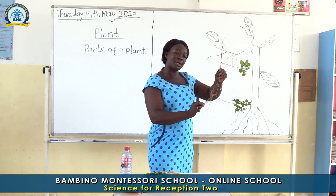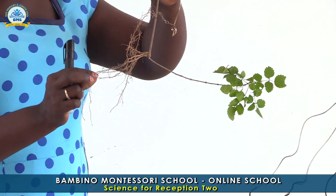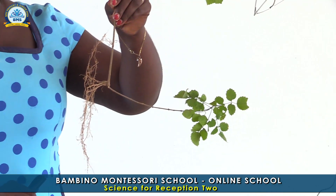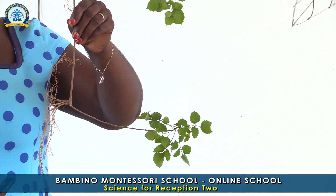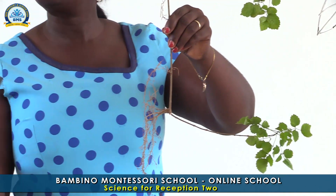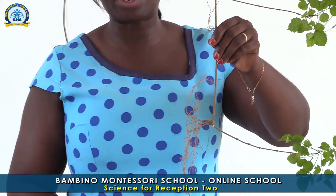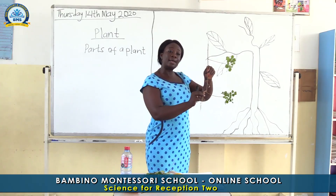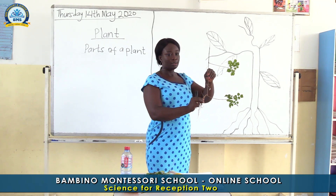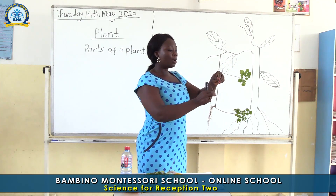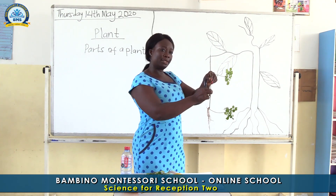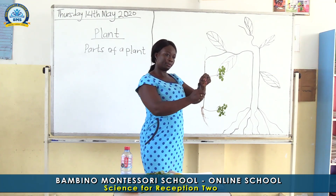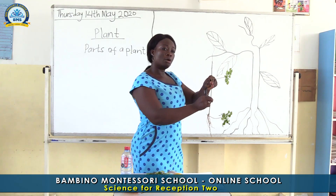You see my plant — this plant has something here. Who can tell me? Can somebody guess what this part is? Yes — the roots! Very good. The down part of the plant is the roots.